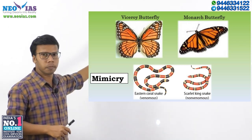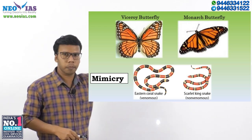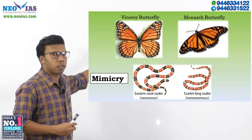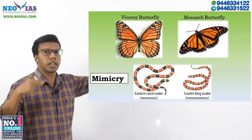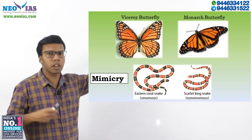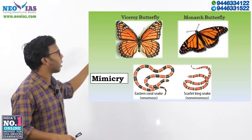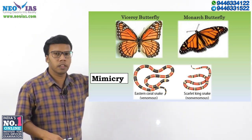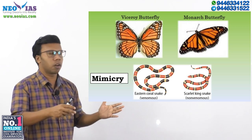The viceroy butterfly has adopted an appearance similar to the monarch butterfly — that is called mimicry. By adopting the monarch's appearance, the viceroy butterfly gains a benefit: because the monarch butterfly is poisonous, predators won't eat the viceroy butterfly, mistaking it for the monarch. The monarch butterfly's poisonous character means predators won't feed on the viceroy butterfly.